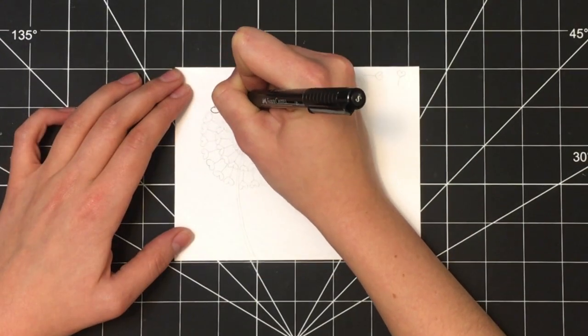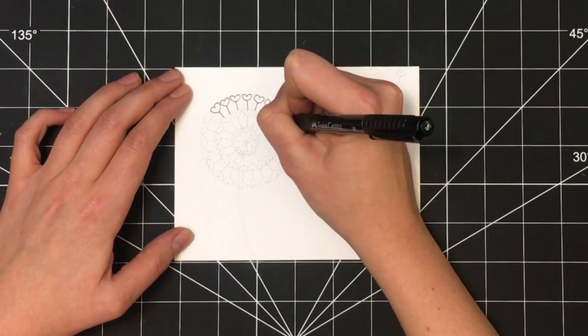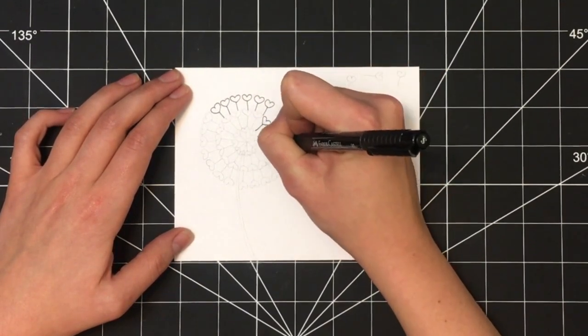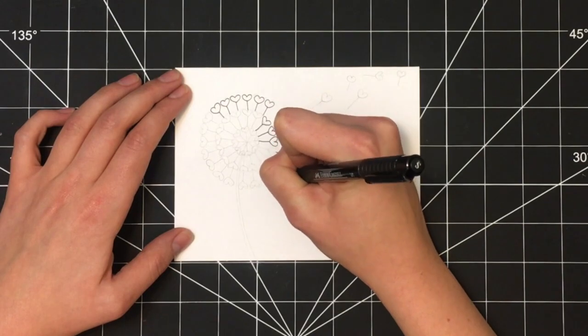Once you have everything drawn out in pencil and you're happy with the design and the placement of the dandelion on your card, switch over to a thin black pen.